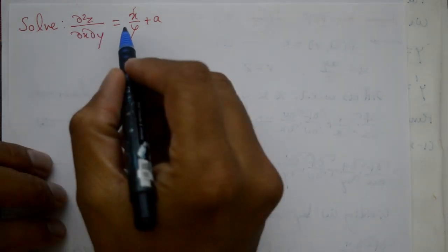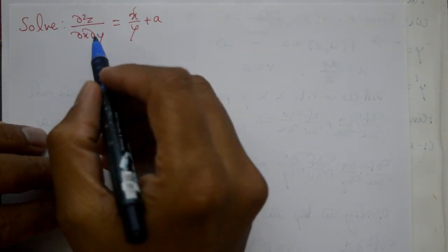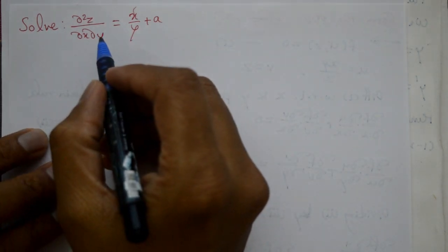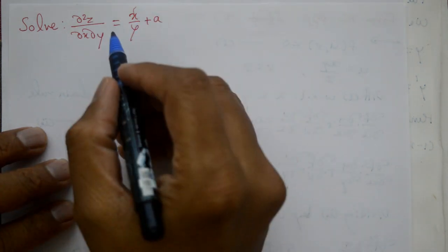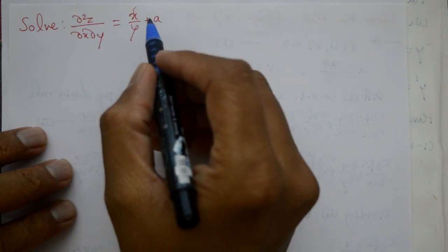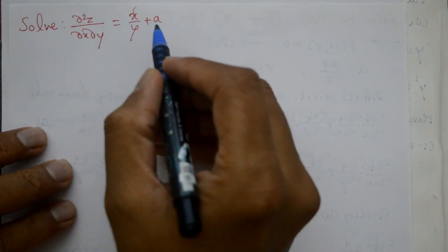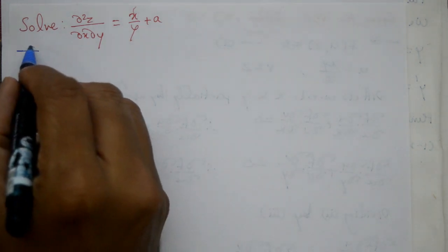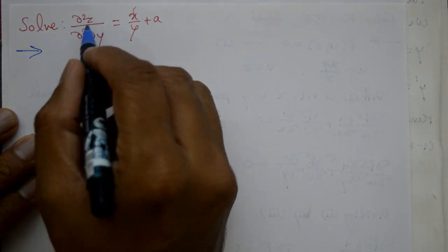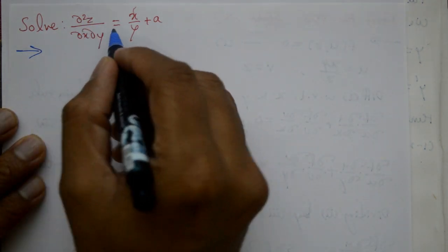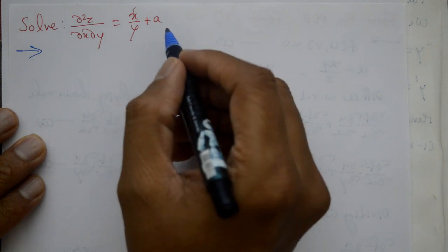Welcome friends, is problem ko solve karenge. Solution of non-homogeneous partial differential equation by direct integration. Solve karo: d²z/dx dy = x/y + a.